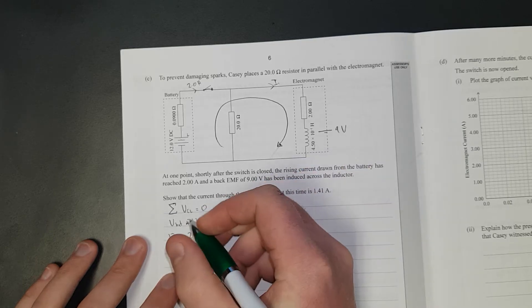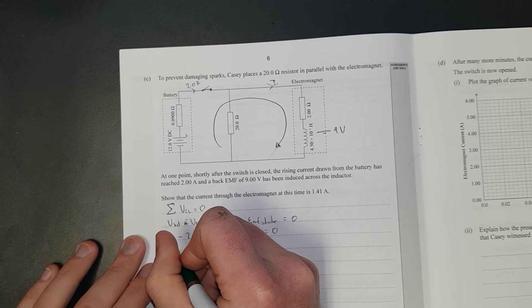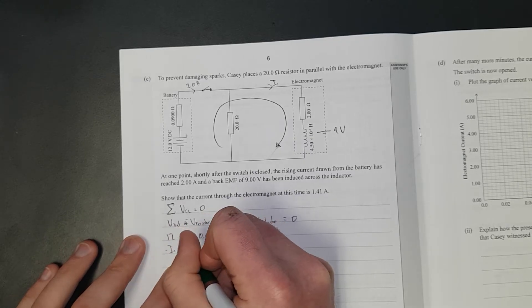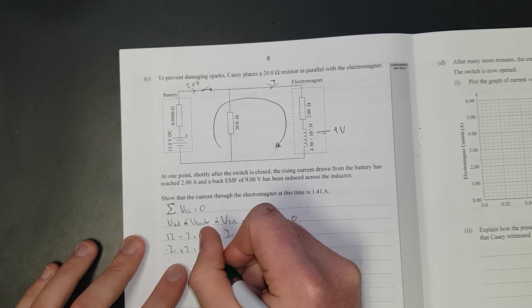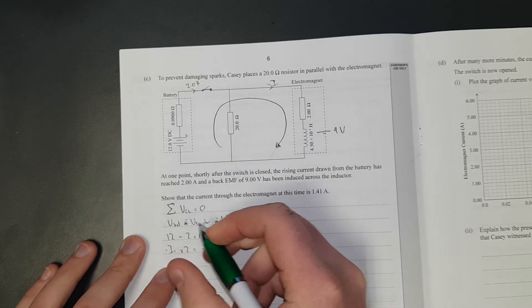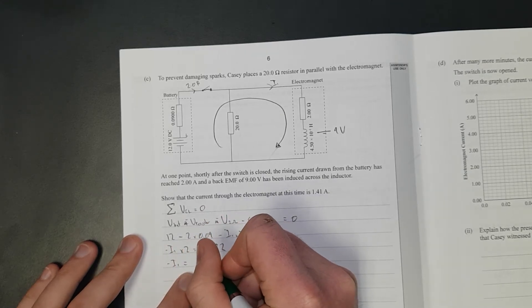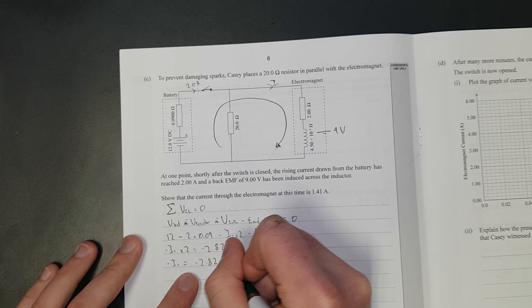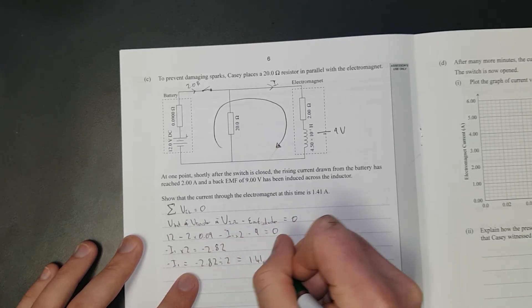So in other words, a little bit of rearranging, minus I1 times 2 equals minus 2.82. In other words, minus I1 is equal to minus 2.82 divided by 2 equals 1.41 amps.